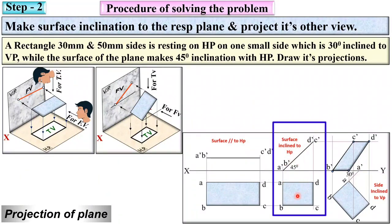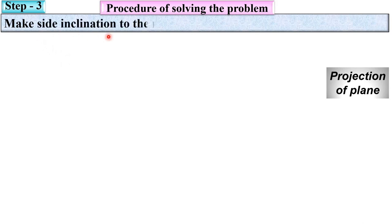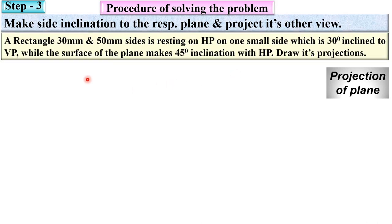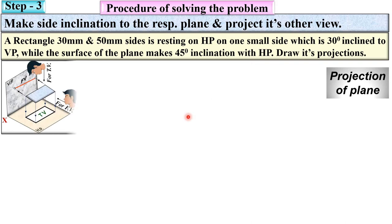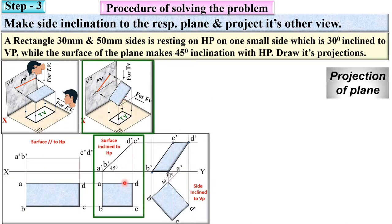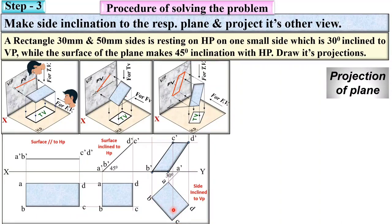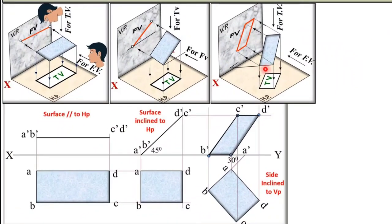This is about the second stage. In stage 3, the plane makes side inclination to the respective remaining plane. We already discussed the first and second stages — the second stage is inclined to HP, so the remaining inclination is inclined to VP. Keep in mind that here side inclination is given, meaning the side of the surface is inclined to VP.